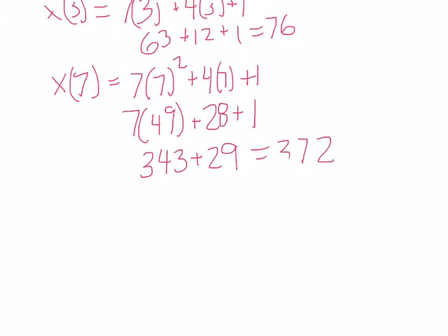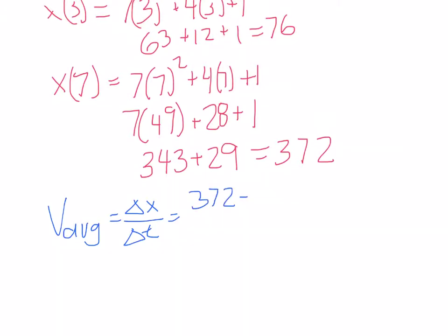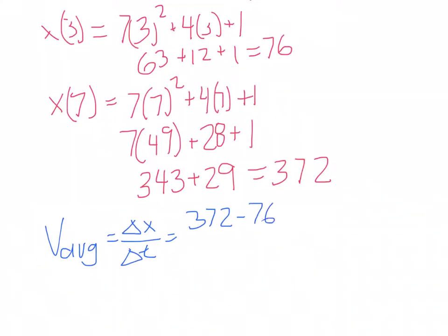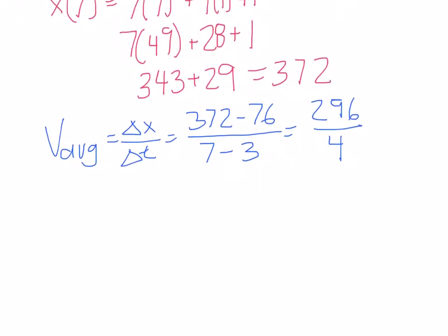We know the average velocity is equal to change in displacement over change in time, which is 372 minus 76 divided by 7 minus 3. This will give us 296 divided by 4.